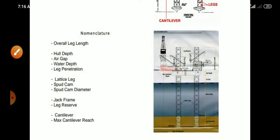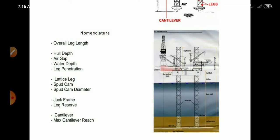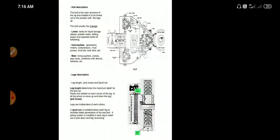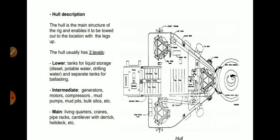Now we see the nomenclature of the jackup rig: overall leg length, hull depth, air gap, water depth, leg penetration, lattice leg, spud can, spud can diameter, jackup frame, leg reserve, cantilever, and maximum cantilever reach. This is the nomenclature information of the jackup rig.